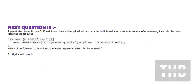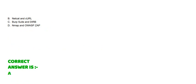Next question is: A penetration tester finds a PHP script used by a web application in an unprotected internal source code repository. After reviewing this code, the tester identifies the following — please see the following script. Which of the following tools will help the tester prepare an attack for this scenario? Option A: Hydra and Crunch. Option B: Netcat and CURL. Option C: Burp Suite and DIRB. Option D: Nmap and OWASP ZAP. And the correct answer is Option A.